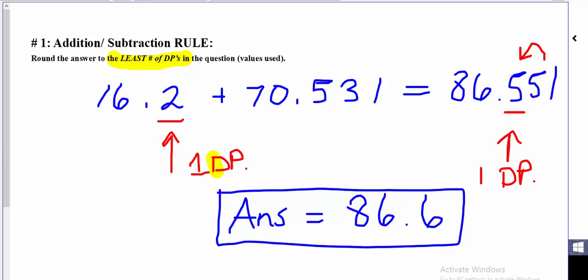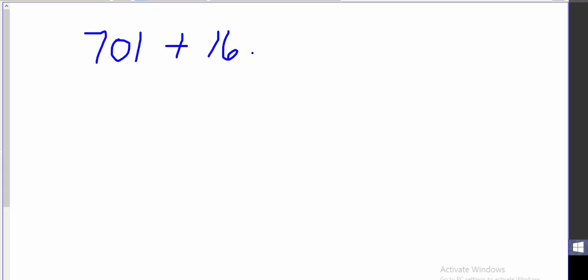Let's do another example. Here I've got 701 plus 16.5. We look at this question. Again, we can go ahead and right away just do the math. 16.5 plus 701 is 717.5. But before I report that, I need to think a little bit about my decimal places. How many am I allowed to have?